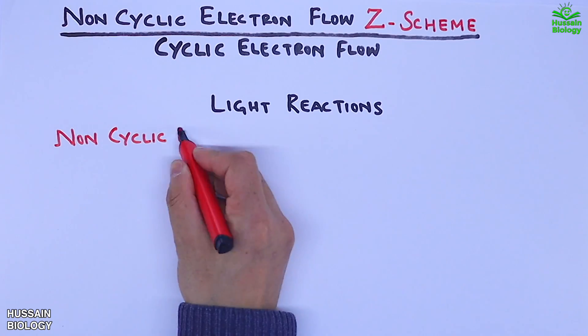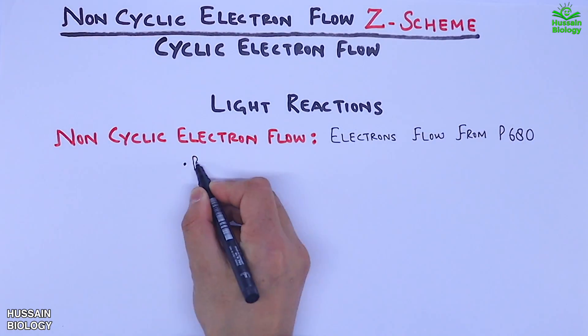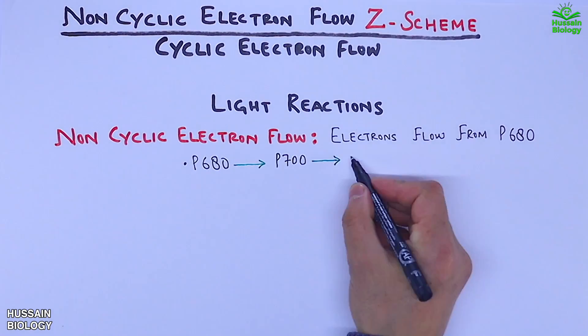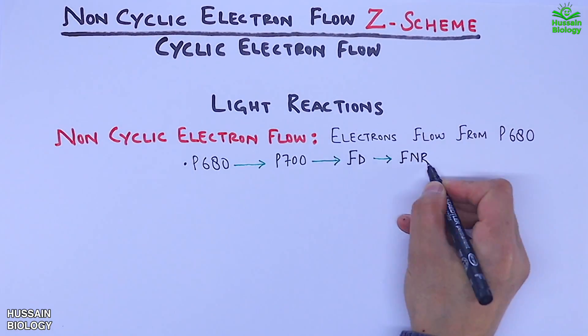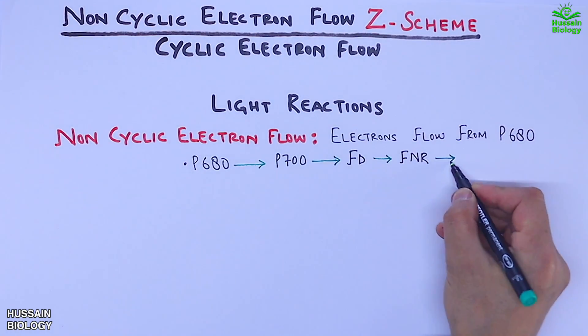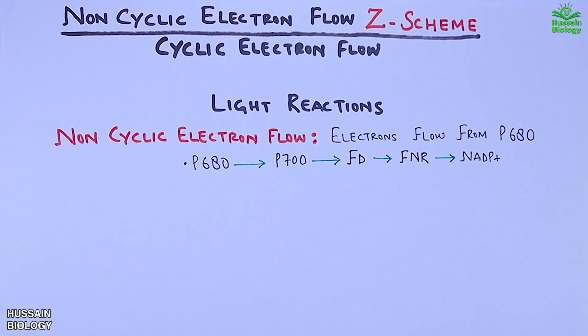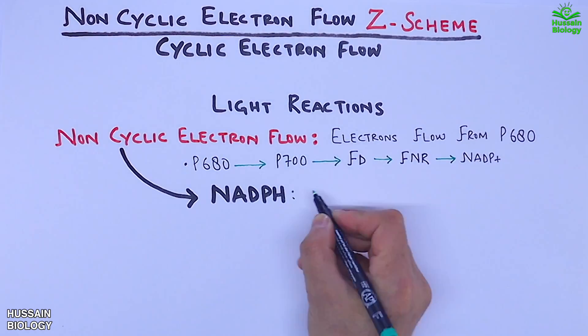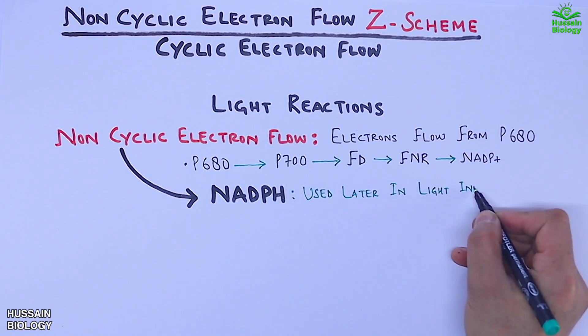In non-cyclic electron flow, the electrons flow from photosystem 680 to photosystem 700, then to ferredoxin, then to FNR (ferredoxin NADP+ reductase), and finally to NADP+. Ultimately we get NADPH from this electron flow, which is later used in the light-independent reactions.